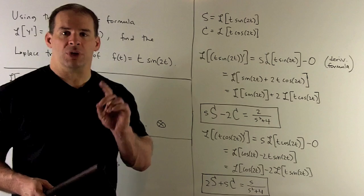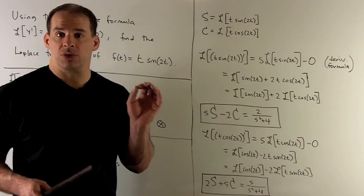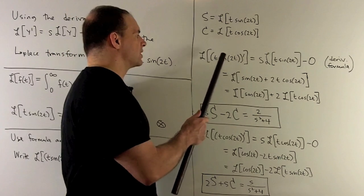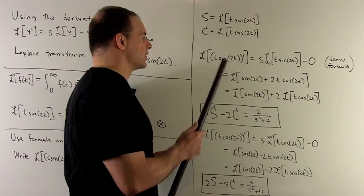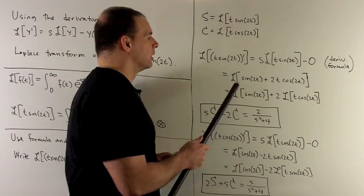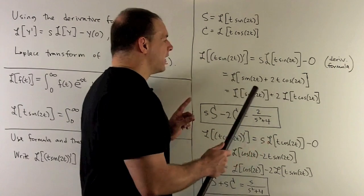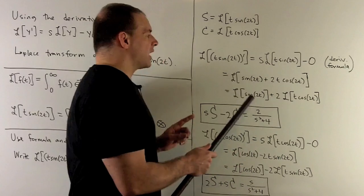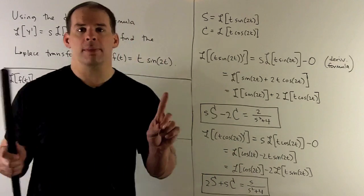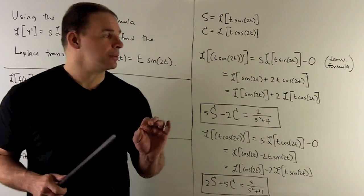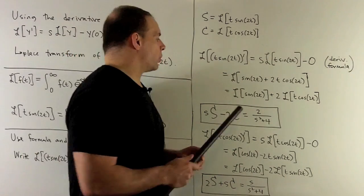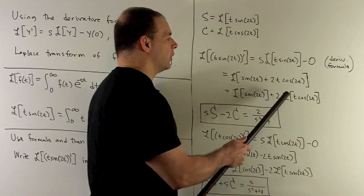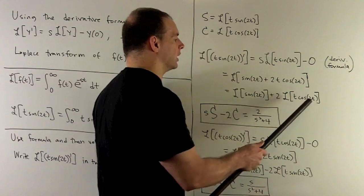For the second way, we just evaluate the derivative using the product rule: derivative of the first times the second, plus the first times the derivative of the second. Then, since the Laplace transform is linear, we can break up sums and factor out constants. This gives us L{sin(2t)} plus 2·L{t·cos(2t)}.